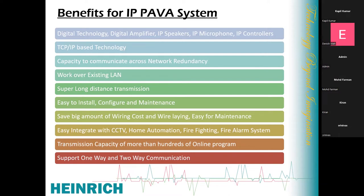Super long distance transmission: wherever your network is reachable, our PA system can be installed there. In digital or analog systems there is a limitation — you cannot run speaker cable beyond 800 to 1000 meters, and you cannot install a second controller beyond 300 to 400 meters from the first. But with an IP system, if there is a network on your premises, you can install controllers or amplifiers anywhere. There is no distance limitation.